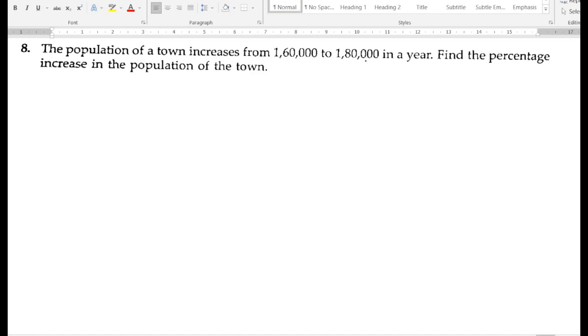Next is the eighth problem. The population of a town increases from 160,000 to 180,000 in a year. So earlier the population was 160,000, now after a year it is 180,000. Find the percentage increase in the population of the town.